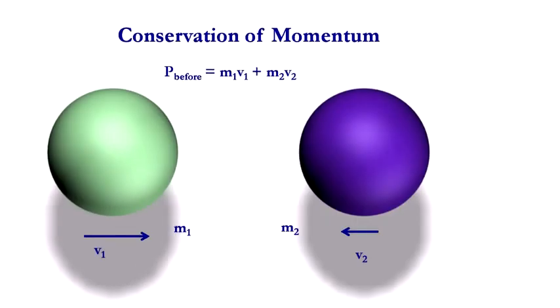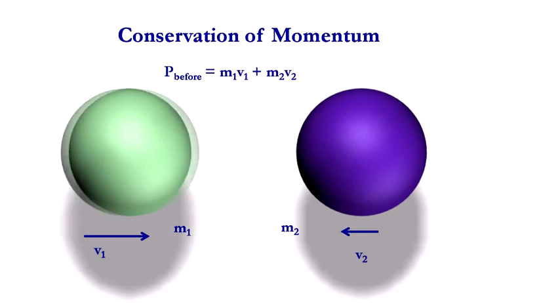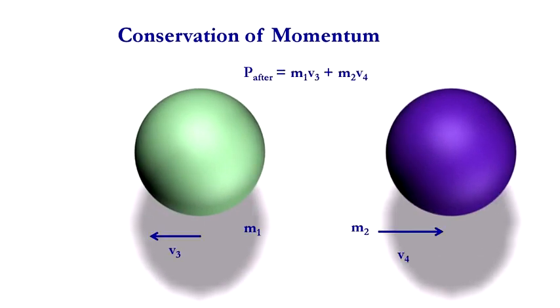Particles are localized and bounce off each other. An important aspect of collisions between particles like these is that the momentum of the system is the same before and after the collision. Momentum is the mass times the velocity.